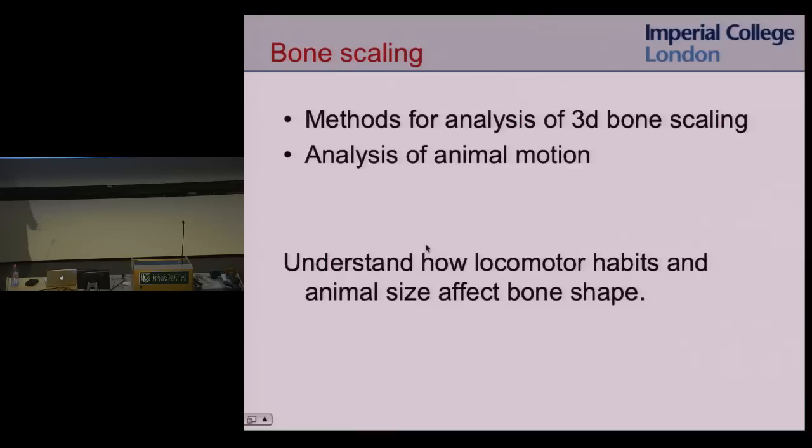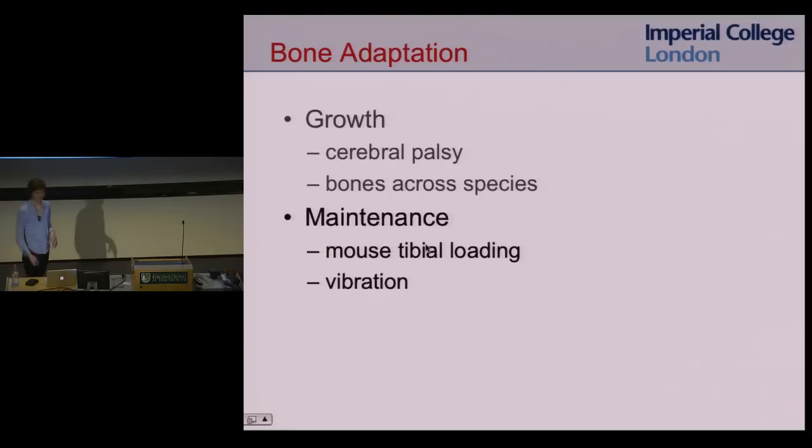In this project, we've developed methods for analyzing 3D bone scaling as opposed to just a single measure of diameter at mid-shaft. 3D bone scaling gives a much better idea of the whole mechanics of the bone — how do bones get bigger to support bigger loads in bigger animals? Putting these together with methods for analyzing animal motion, we hope to understand how locomotor habits and animal size come together to affect bone shape.